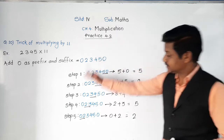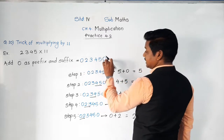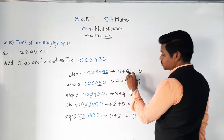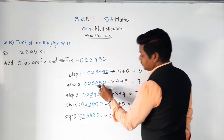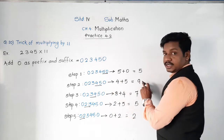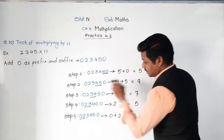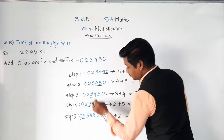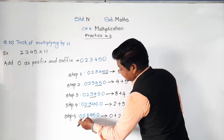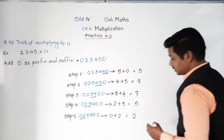So we have solved this example in five steps. First, we added zero as prefix and suffix. Then we wrote the number and underlined the last two digits and added them to get 5. Then the next pair gave us 9. Then 3 plus 4 gave us 7. Then 2 plus 3 gave us 5. Then 0 plus 2 gave us 2.